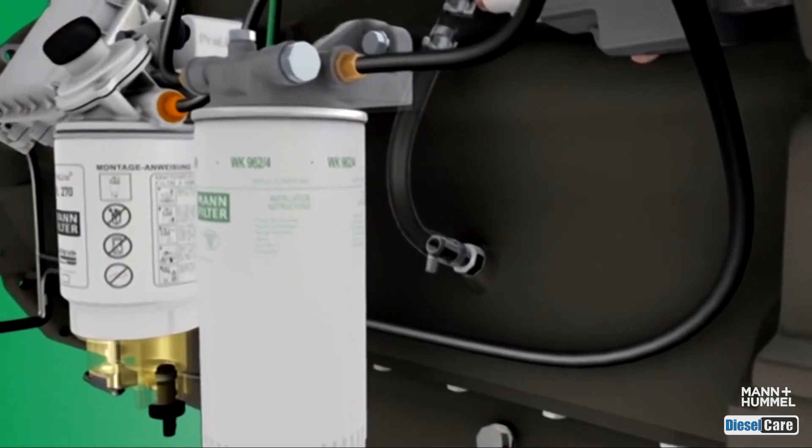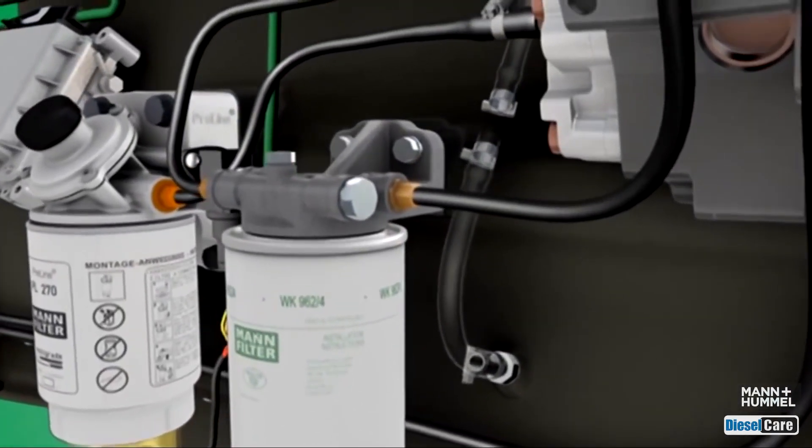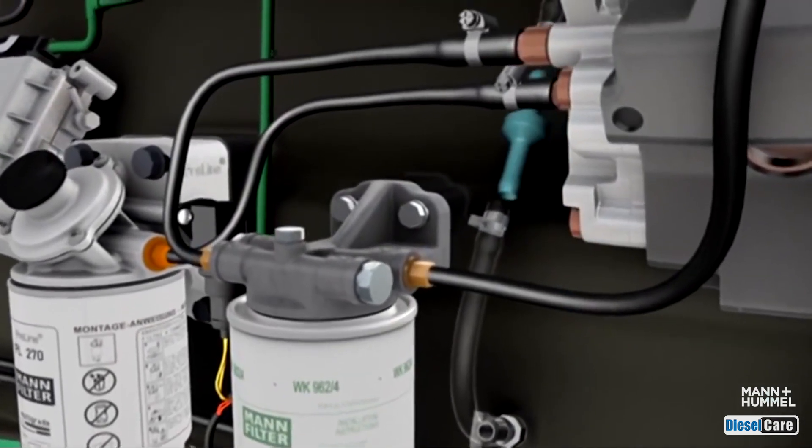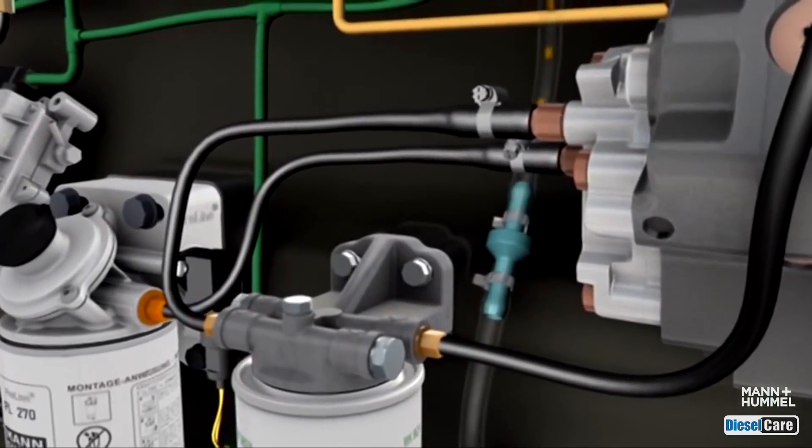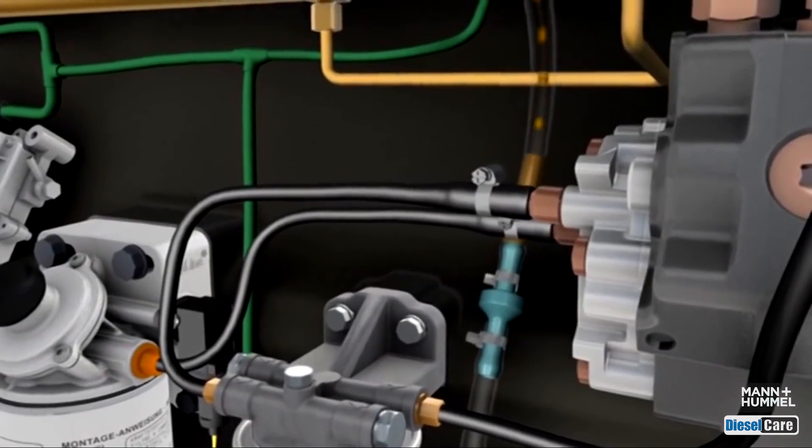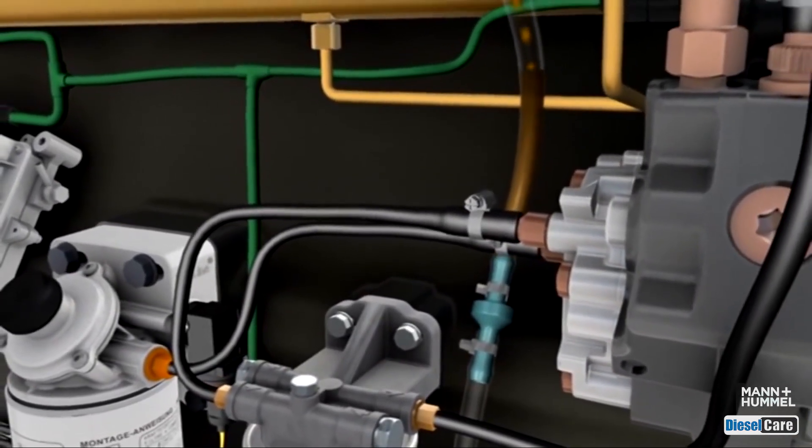If this is not possible or not desired, the oil recirculation can optionally be made above the oil level. In this case, Mann+Hummel offers a valve for fitting in the drainage pipe which will prevent this bypass.